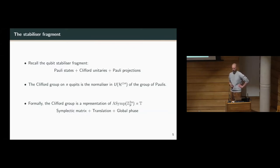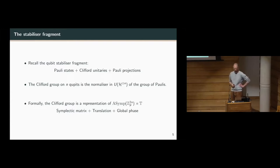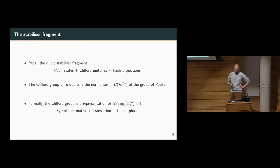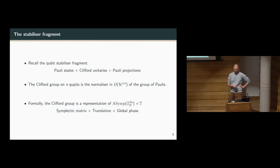One difference from the qubit case: in prime dimensions you can give a very nice presentation of the Clifford group in terms of the representation of the affine symplectic group plus a phase. The upshot is that you can think of any Clifford unitary as a symplectic matrix plus a translation plus a global phase.